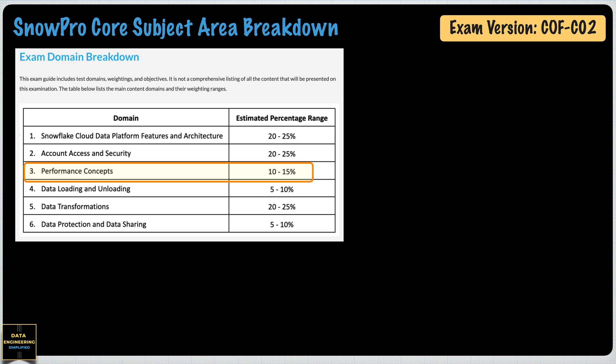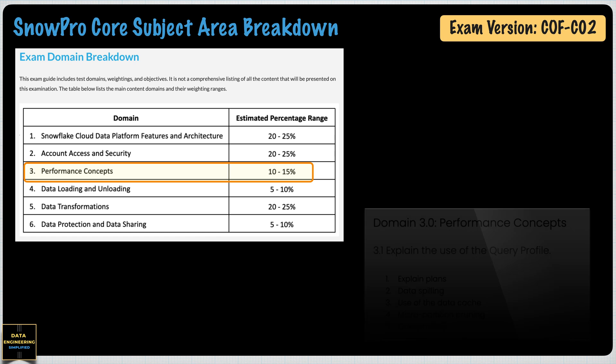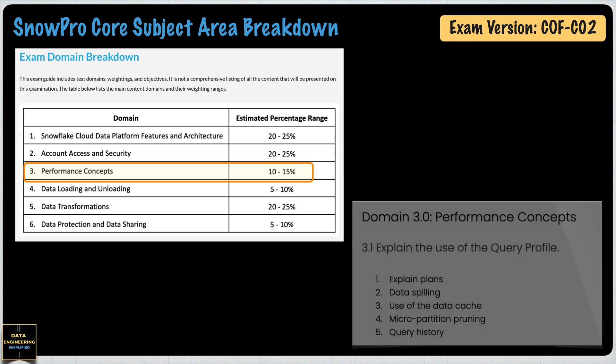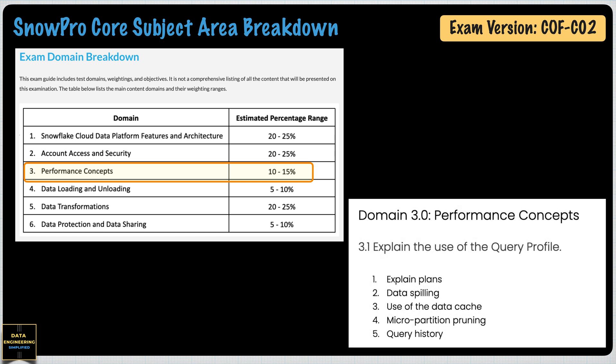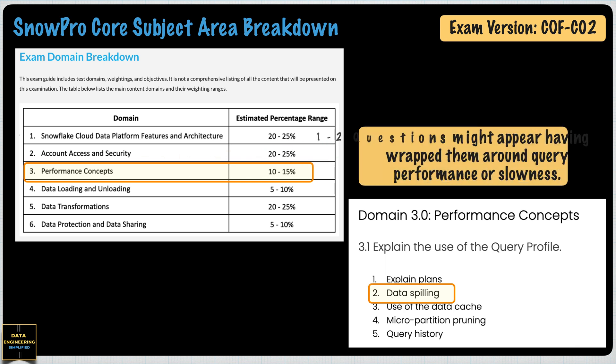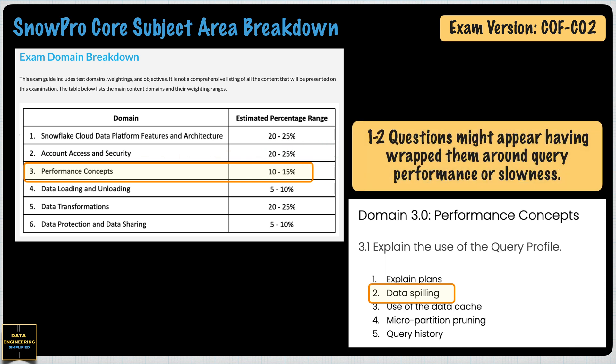The performance concept was part of the old syllabus, but this subtopic data spilling was added newly to the certification scope. The performance concept has a 10-15% estimated range in your exam, which translates to somewhere around 10-15 questions across all subtopics under performance concept. You may see 1, 2, or 3 questions from data spilling in your exam, and hence it is worth going through this MCQ.